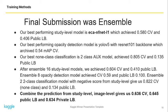Our best performing study-level model is ECA-NFNet-L1 which achieved 0.58 CV and 0.406 public leaderboard score. Our best performing opacity detection model is YOLO v5 with ResNet-100 backbone which achieved 0.54 mAP CV. Our best non-COVID classification model is a two-class model with a segmentation head achieving 0.805 CV and 0.135 public leaderboard score.